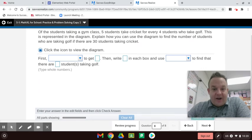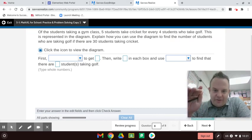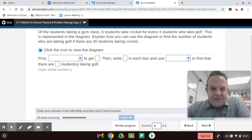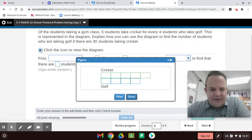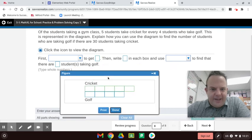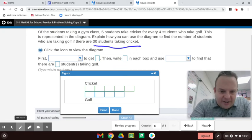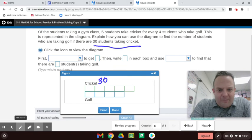Of the students taking gym class, five students take cricket for every four students who take golf. So that right there, guys, that is the known ratio. This is represented in the diagram. Explain how you can use the diagram to find the number of students who are taking golf if there are 30 students taking cricket. So five students for every four taking golf. Five to four is equal to 30 to something would be the proportion. So they're doing this type of diagram here. And with this cricket, you can see five crickets for every four golfs. Now, they give you the known ratio. The known ratio is five to four. That's the known ratio. And then they'll give you one of them. So 30. So they say cricket is 30.